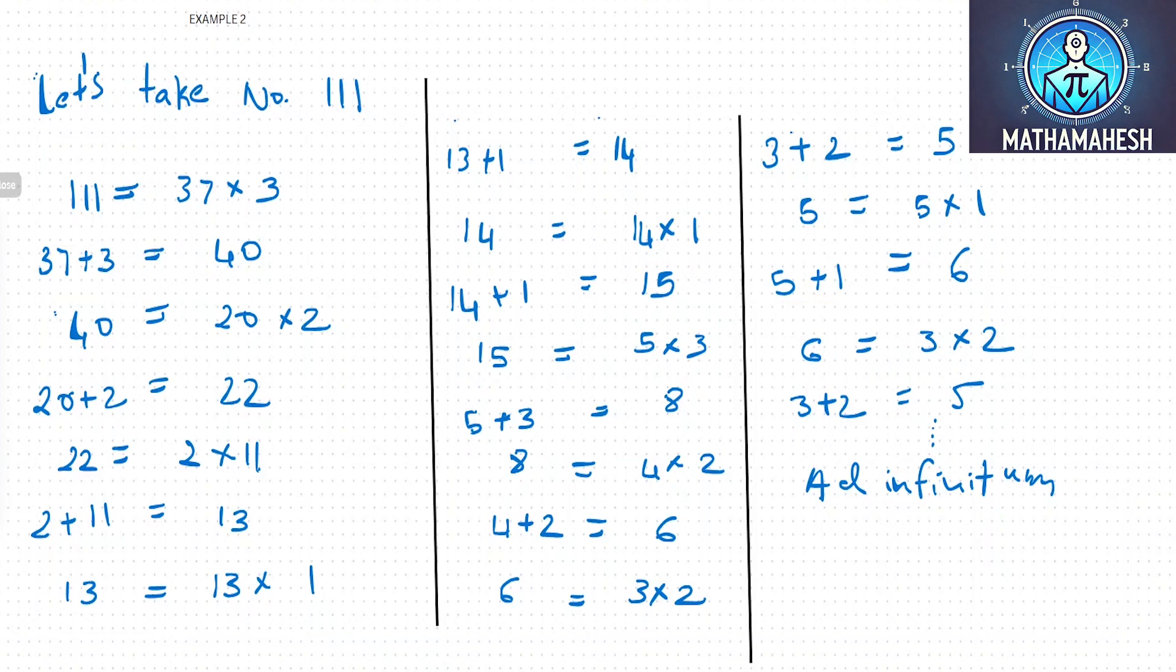111 can be factored as 37 into 3. On adding 37 and 3, you get 40. 40 can be factored as 20 into 2. 20 plus 2 is 22. 22 can be factored as 2 into 11. On adding 2 and 11, you get 13.